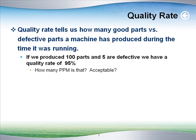Now let's talk about quality rate — the last part of our formula. Quality rate tells us how many good parts versus how many defective parts a machine has produced during the time it was actually running. So if we produced 100 parts and five are defective, then we have a quality rate of 95%. In terms of parts per million, that's about 50,000 bad parts out of a million. Five out of 100 really takes away profits and can create all kinds of other problems. If you've been in manufacturing for very long, you know that occasionally some of those 5% that were bad are going to wind up in the hands of your customers. That's why we track it.